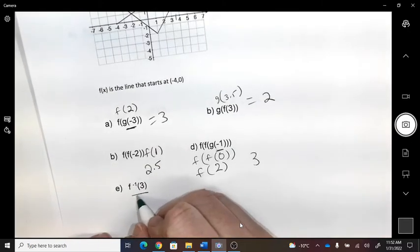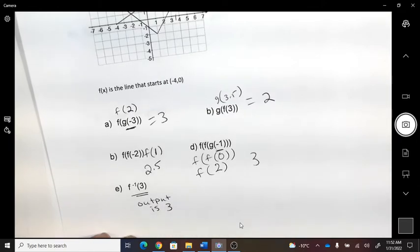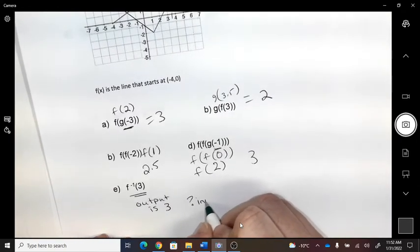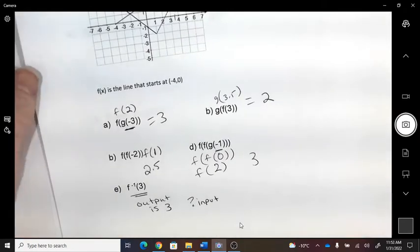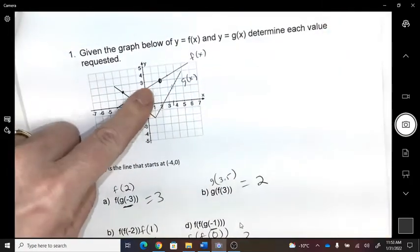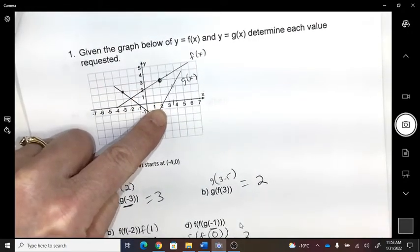And this one, so the output is three. What is the input? So I'm going to go to the f line. So here, the output is three. Therefore, the input was two.